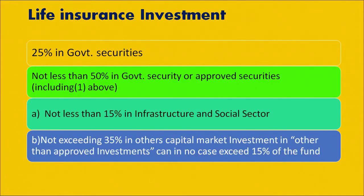Having talked about the benefits of liberalization, let us understand how funds towards the insurance sector should be allocated. As per IRDA, not less than 50% should be allocated in government securities or approved securities, and a minimum of 15% should be allocated in infrastructure and the social sector. A maximum of 35% is the upper cap laid down for capital market investments, which includes equity investments. Hope you had a good learning. Thank you.